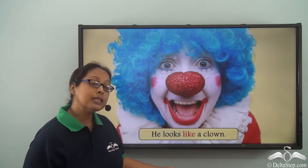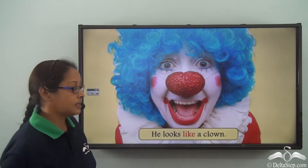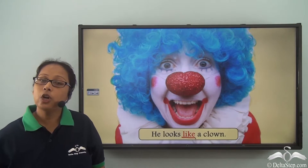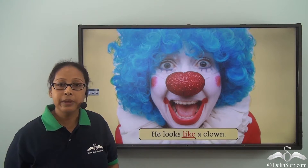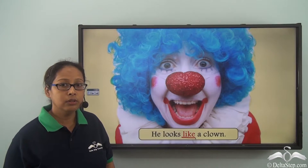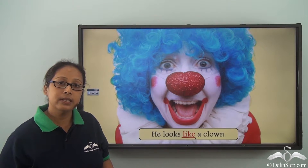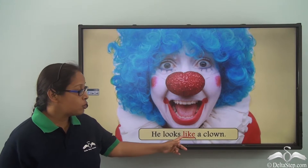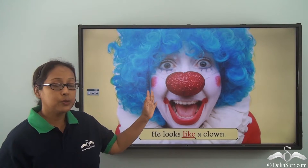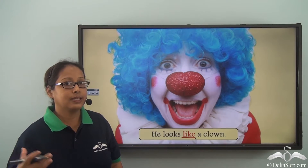He looks like a clown. So which is the preposition in the sentence? It is 'like.' When we talk about 'like,' we mean that he looks similar to a clown, or he is dressed in the manner that a clown dresses. So we have used the preposition 'like' here, which brings out the similarity between this person and the way a clown dresses.